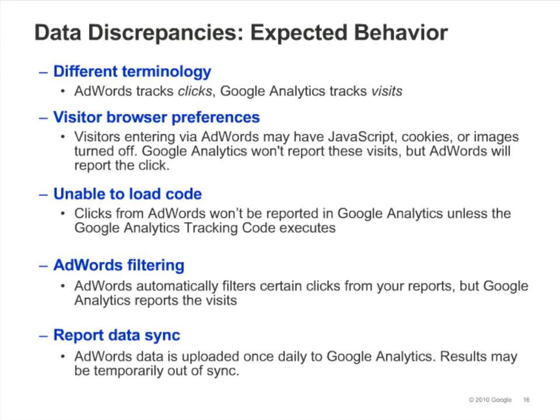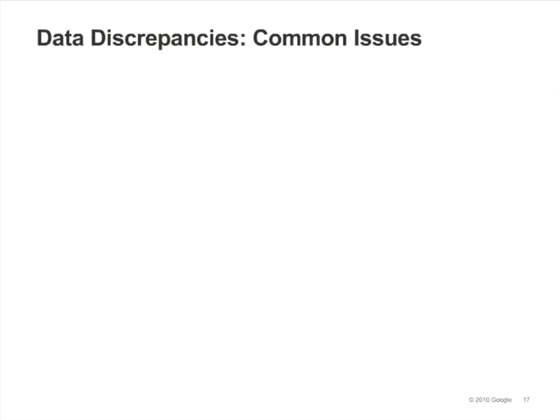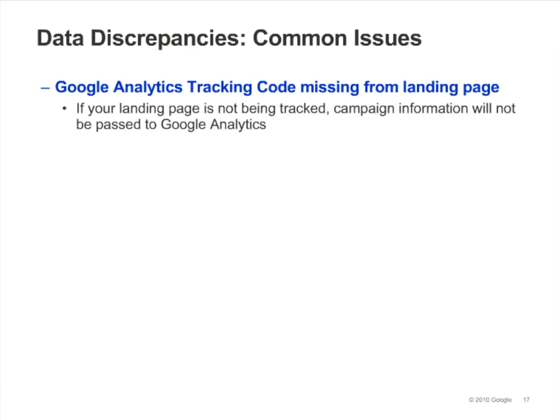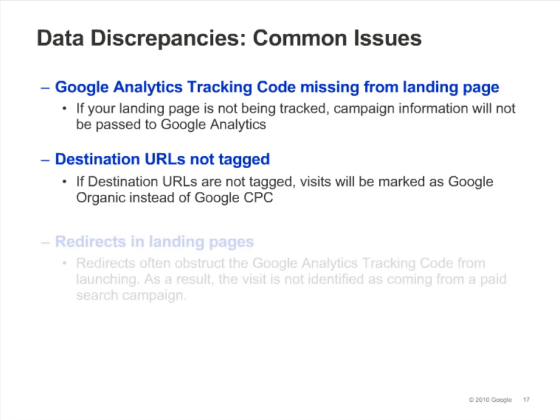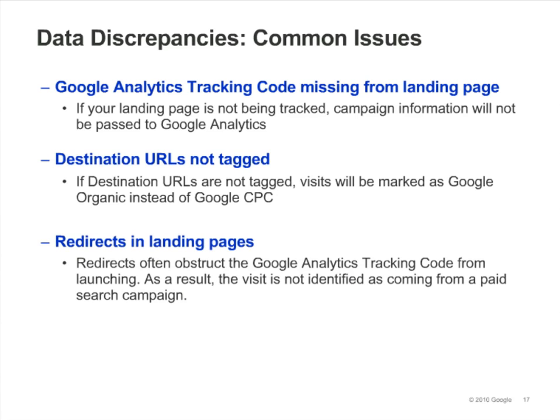Finally, keep in mind that AdWords data is uploaded once a day to Analytics, so the results for each may be temporarily out of sync. Make sure that your landing pages contain the Google Analytics tracking code. If they don't, campaign information will not be passed to Analytics, but clicks will register in AdWords. Make sure that you have auto-tagging enabled; otherwise, visits will be marked as Google Organic instead of Google CPC. If you do manually tag your destination URLs, you must make sure that all of them are tagged — otherwise, data discrepancies will occur. Be aware that campaign data can be lost if your site uses redirects, so Analytics won't show the visits as coming from AdWords, but your AdWords report will still report the clicks.